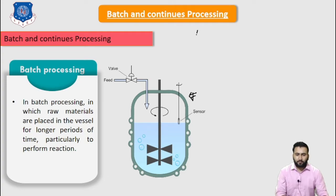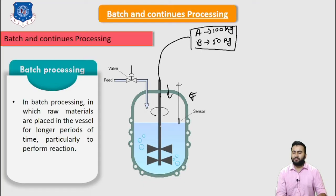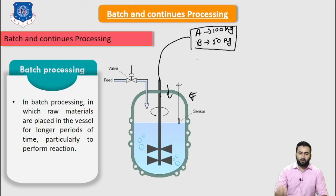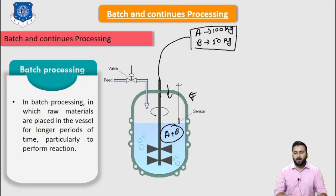Let's suppose there are two reactants: reactant A which has 80 kg and reactant B which is 50 kg. We are going to add both reactants directly into this reactor. We are going to allow both reactants to react over a long period of time and produce the product. Both are allowed to settle down in this vessel and react with each other for a long period of time, and it will give product C.